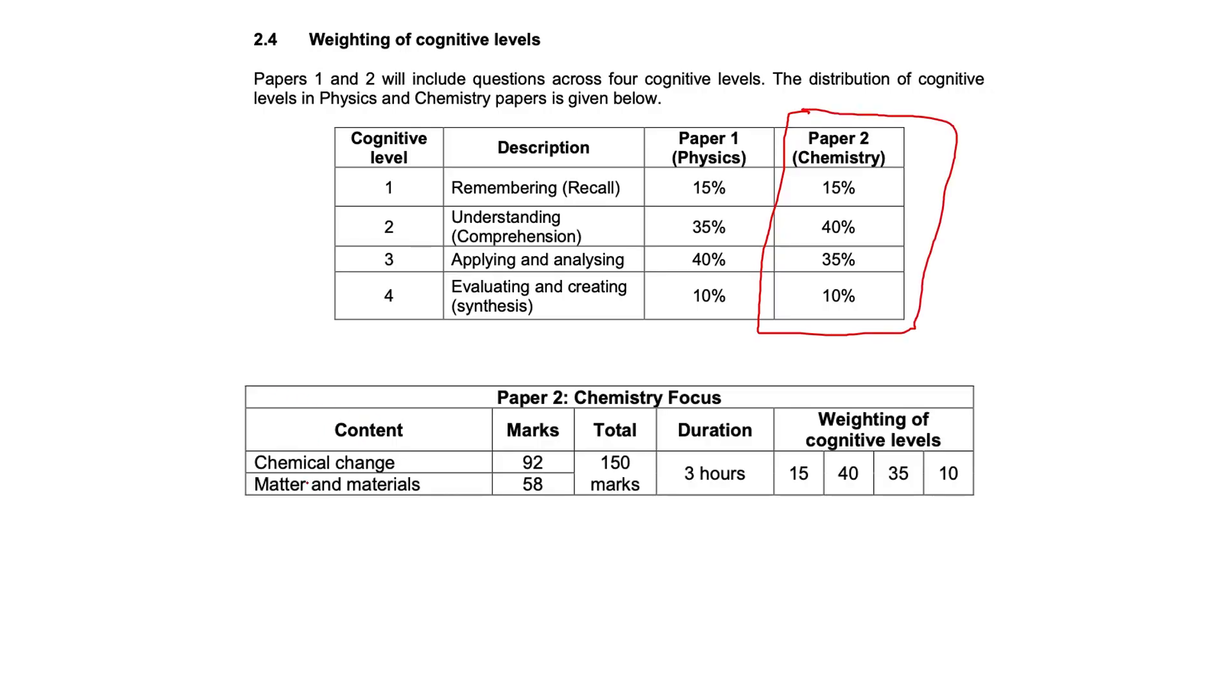Content-wise, they divide chemistry into two sections: chemical change, and matter and materials, which is usually more redox reaction stuff. Then you get your organic reactions and organic compounds—all of that will fall into these two categories.